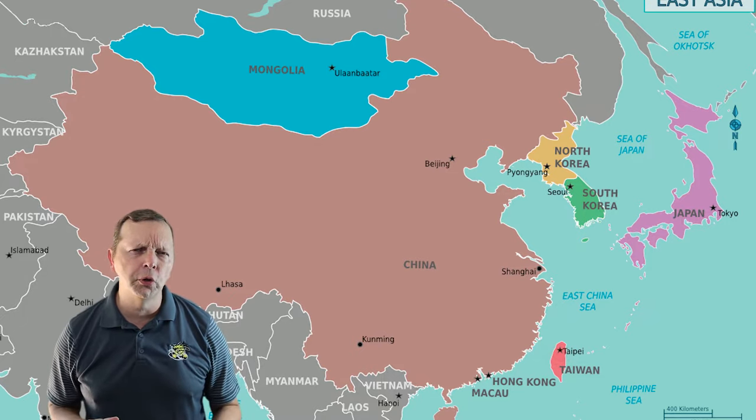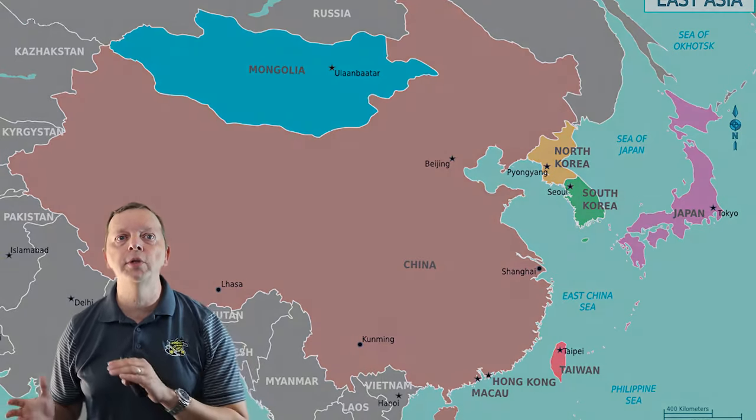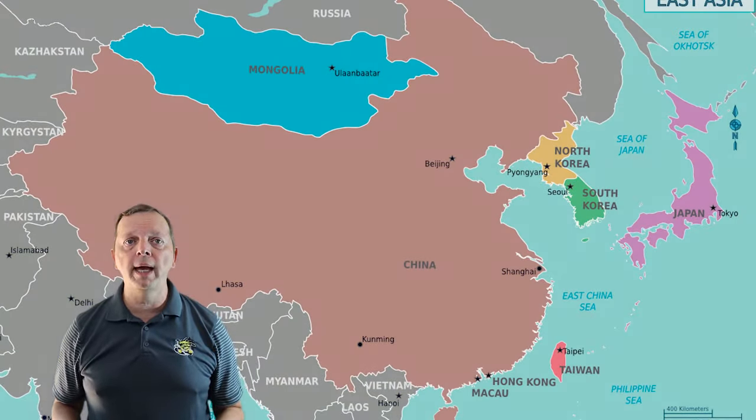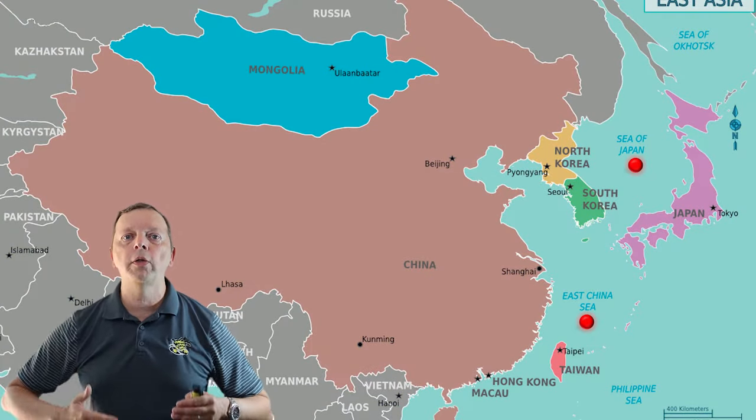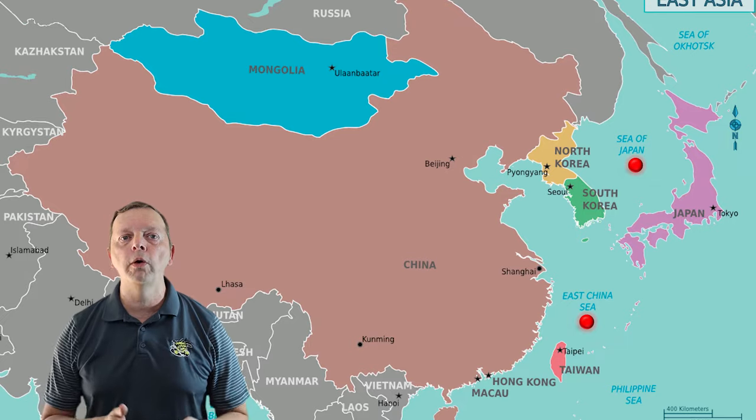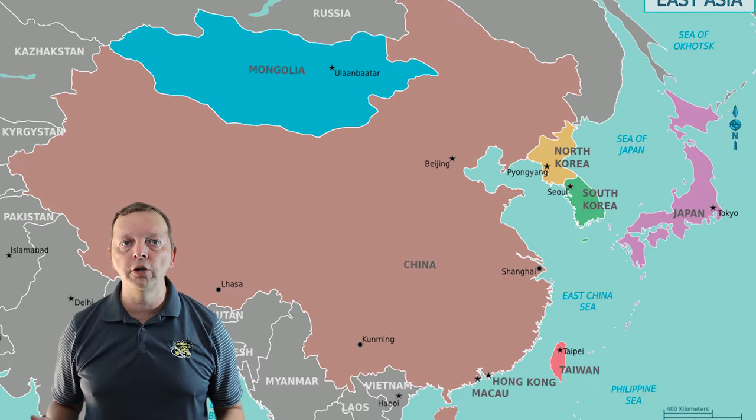Taiwan is a controversial country, as China actually claims it as part of their own country and not as a separate country. This is a very delicate situation, which we're going to talk about when we discuss East Asia's modern issues. The Sea of Japan and the East China Sea are two bodies of water that are important for our discussion on East Asia.